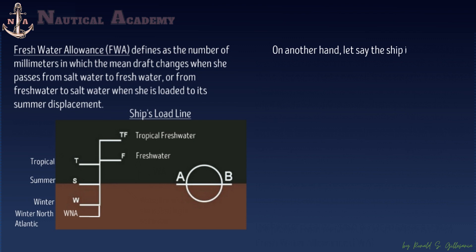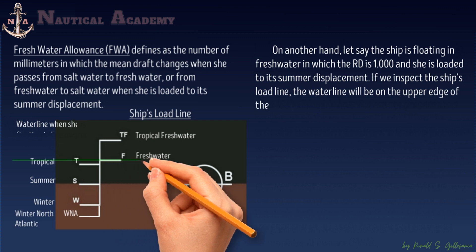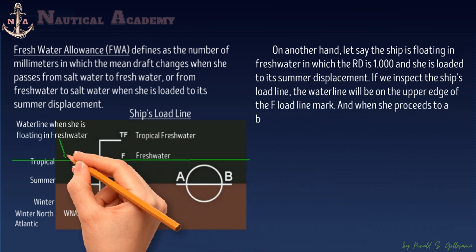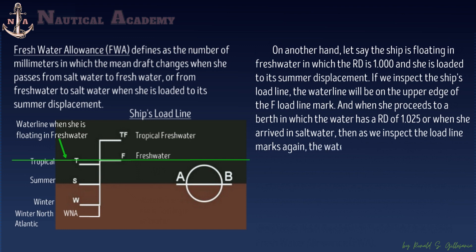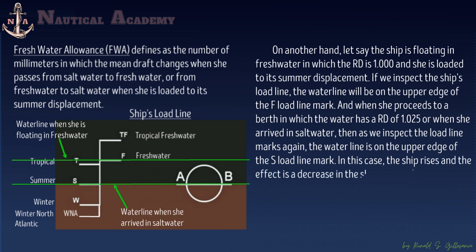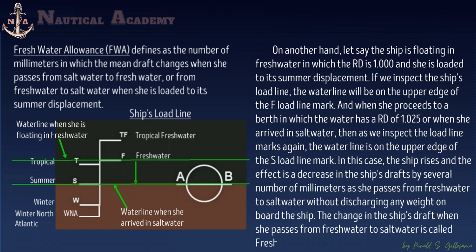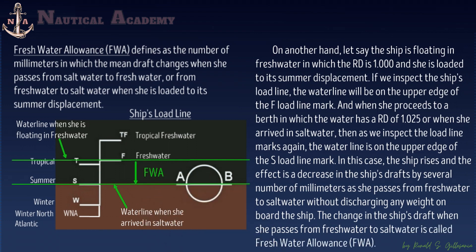On the other hand, if the ship is floating in freshwater with a relative density of 1.0 and is loaded to her summer displacement, the waterline will be on the upper edge of the F load line mark. When she proceeds to a berth with a relative density of 1.025, or saltwater, the ship rises and the waterline moves to the upper edge of the S load line mark. The result is a decrease in the ship's drafts by several millimeters as she passes from freshwater to saltwater without discharging any weight. This change in draft is also called freshwater allowance. The change in drafts due to fuel and freshwater consumption is disregarded.